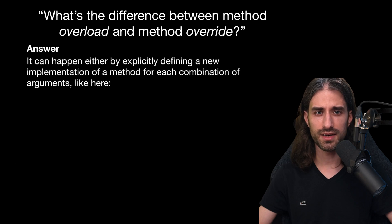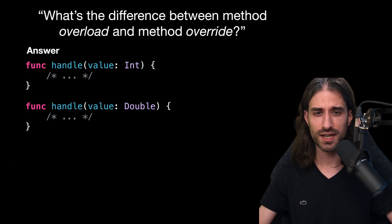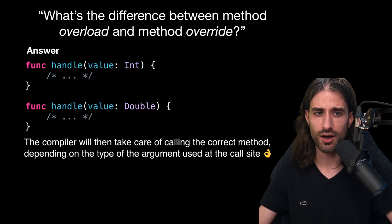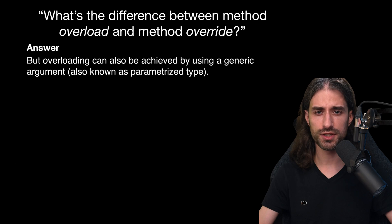It can happen either by explicitly defining a new implementation of a method for each combination of arguments. Like in this example, here we have two different implementations of the same method name, but we can see that each implementation has a different type for its argument. The compiler will take care of calling the correct method depending on the type of the argument we use at the call site.